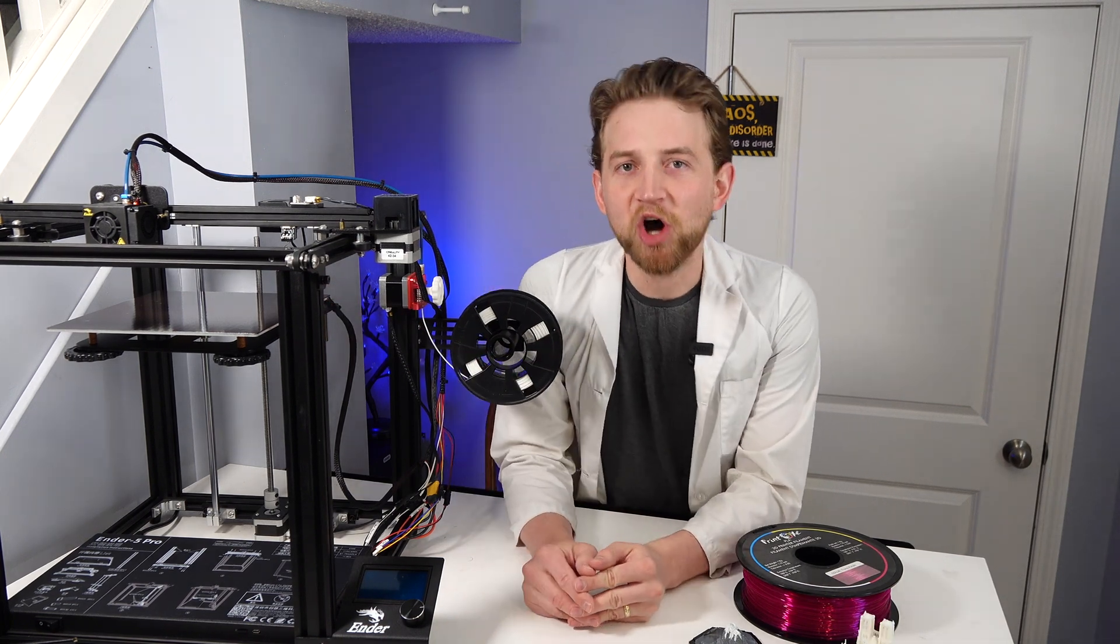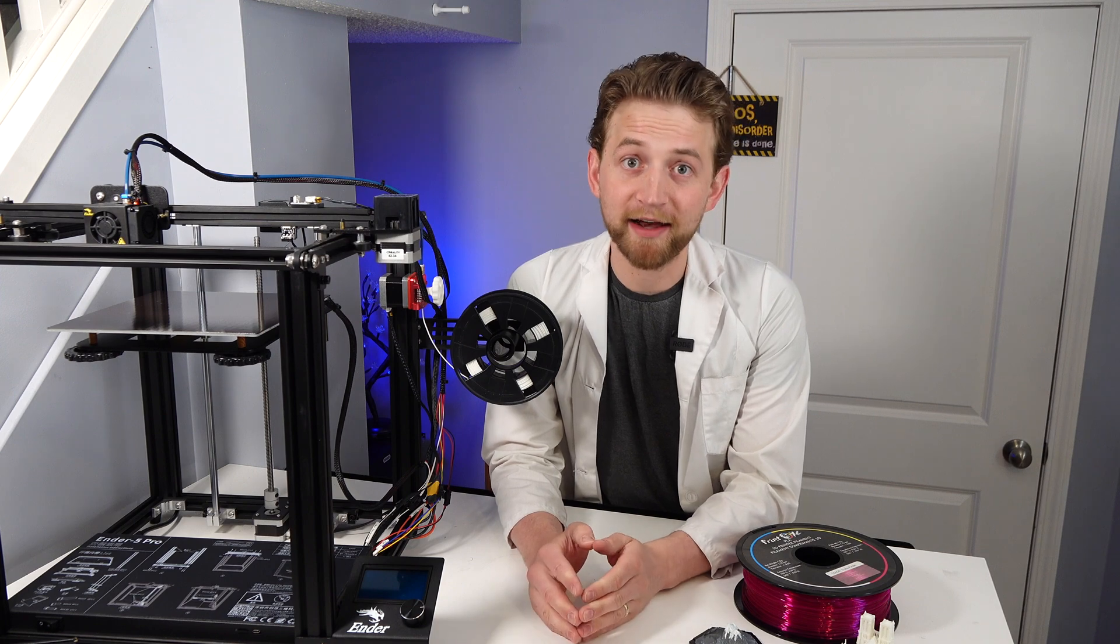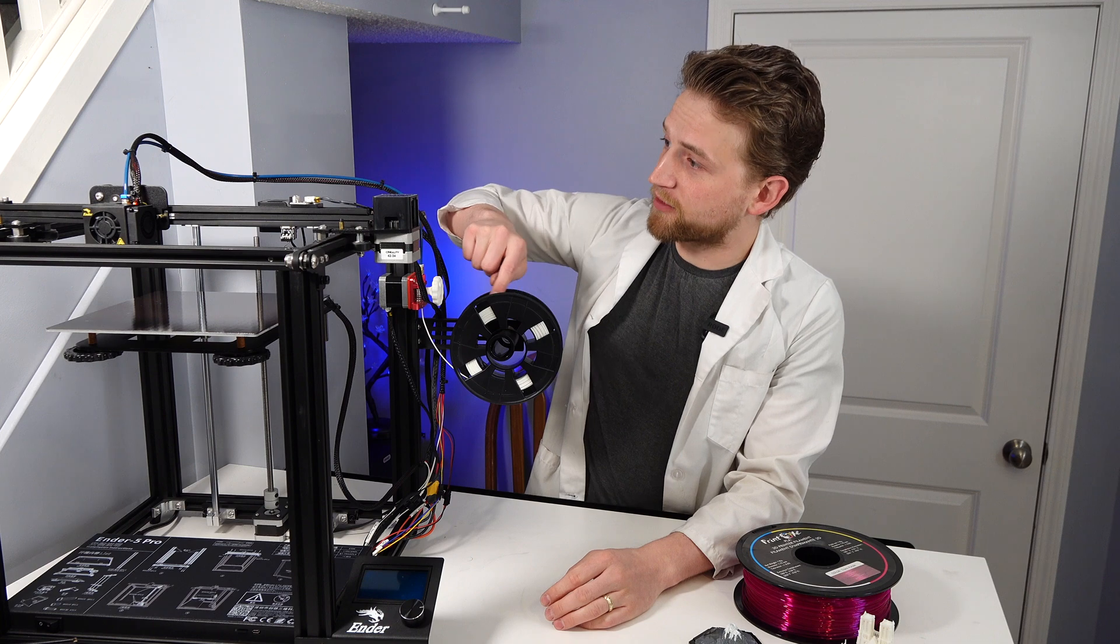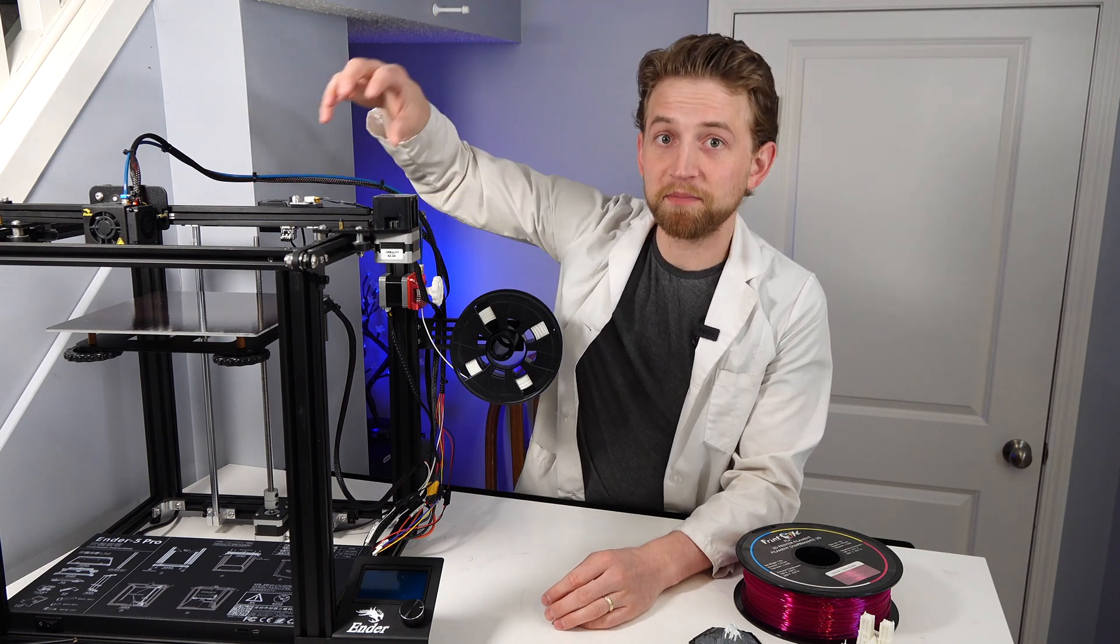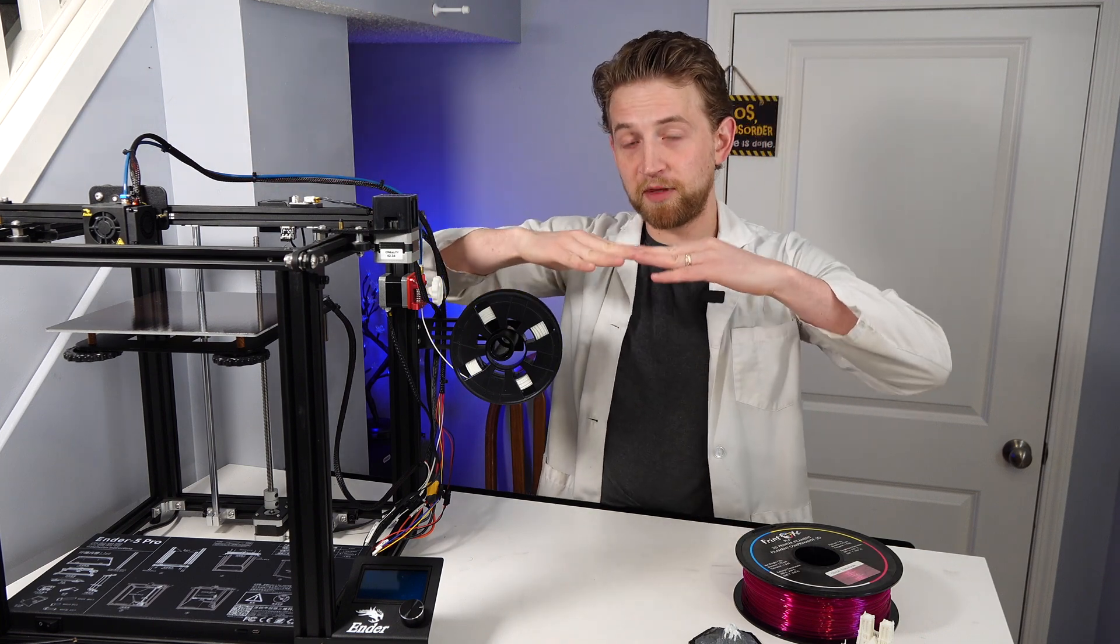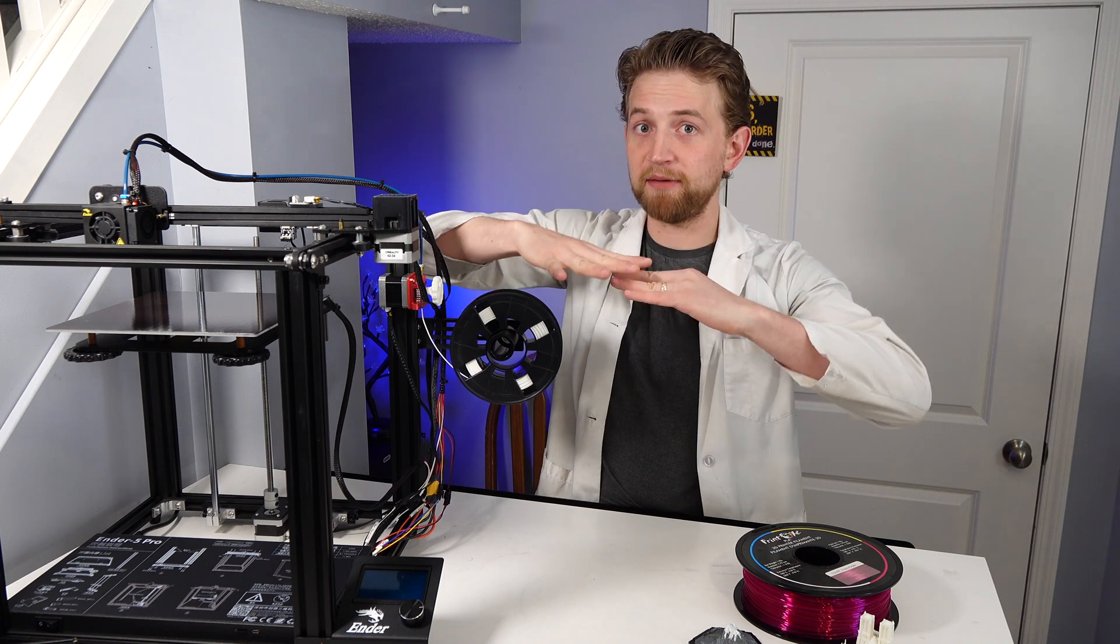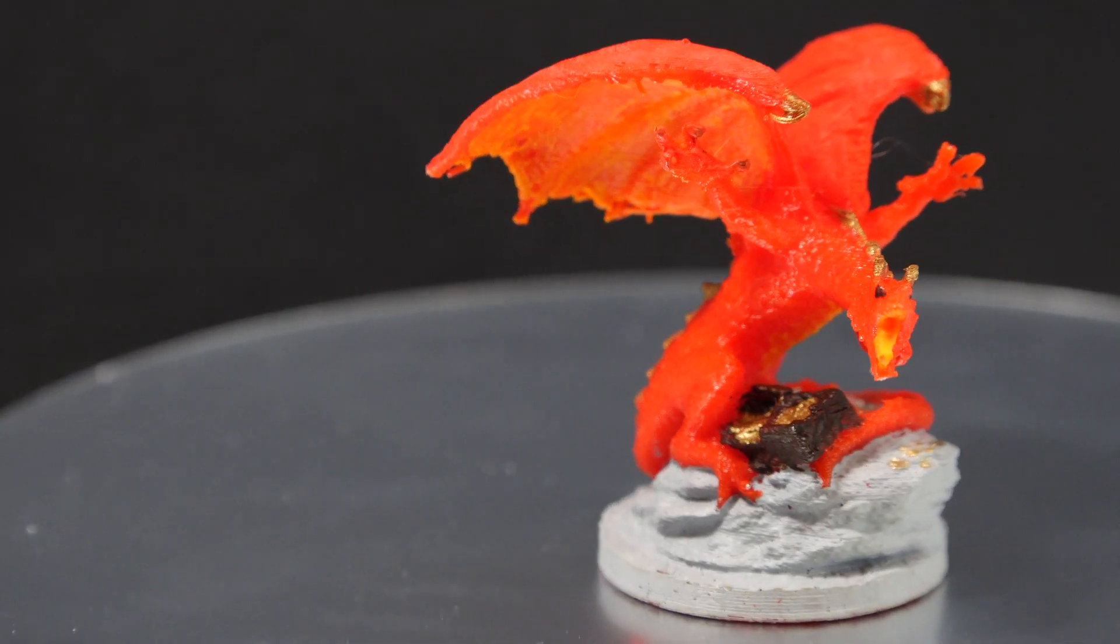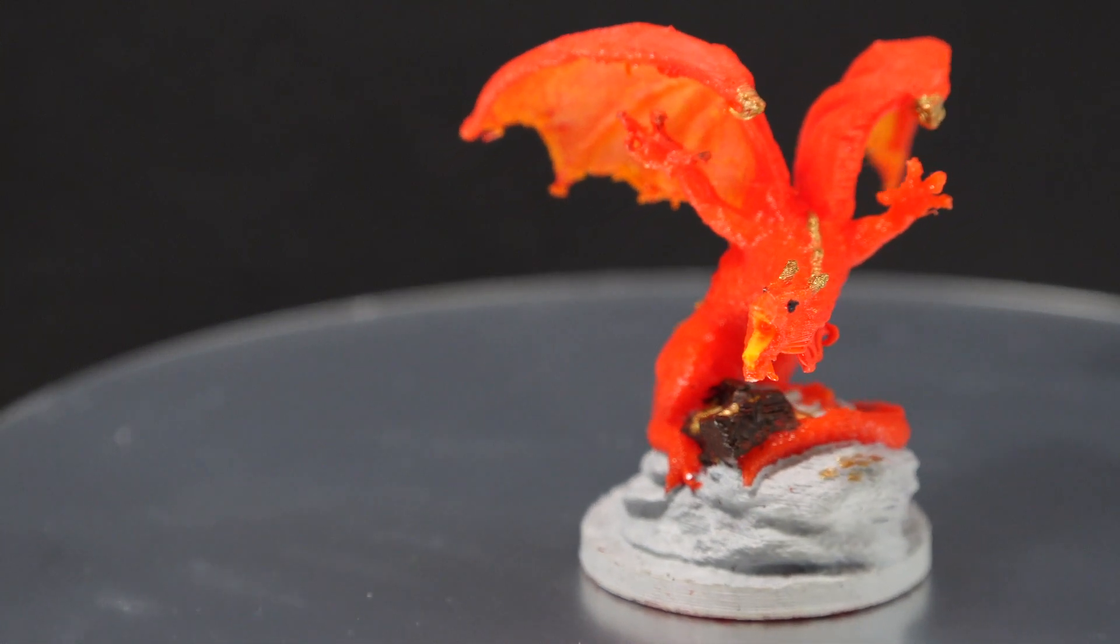FDM is the most common of 3D printing. And again, FDM is Fused Deposition Modeling. And that's where the filament goes through the tube, through the nozzle, gets warmed up, melts. You print a layer, the bed moves down, prints another layer, bed moves down, print another layer, all the way until you get a little dragon or Notre Dame's Cathedral.